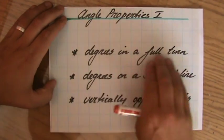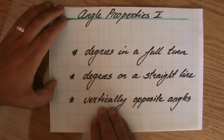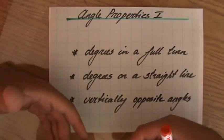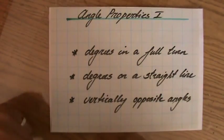In this video we're going to look at degrees in a full turn, degrees on a straight line, and vertically opposite angles. And it's important also that you are familiar with the language. Vertically opposite angles, degrees on a straight line, and degrees in a full turn.